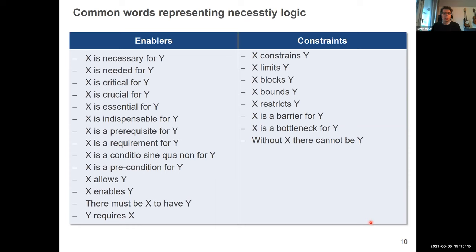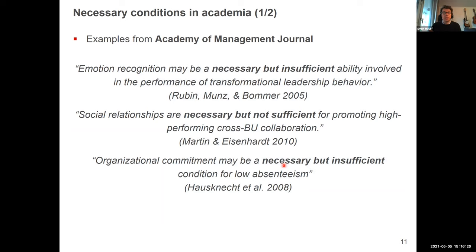In everyday life we use multiple words representing necessity logic: X is necessary for Y, X is needed for Y, X is critical for Y, X is crucial, essential, indispensable for Y, X is a prerequisite, a requirement. Sometimes we also state necessity in terms of constraints: X constrains Y, X limits Y, X blocks Y, X bounds Y, restricts Y, is a barrier for Y, is a bottleneck for Y. In all these instances we say that without X there cannot be Y. We find necessity thinking in many many theories.